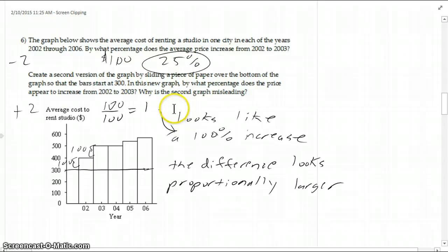So 100 over 400 is 0.25 or 25 percent increase. And then on this one, it's like, hey, what if we just chopped the graph off here at 300? Well, if we look at this, if the graph was chopped off here, then it would be a 100 increase. So again, 100, but now we're only comparing it with 100. 1 over 100 is 1, which looks like a 100 percent increase if you distort this graph. So it says, why is the second graph misleading? Because it makes it look proportionally much larger than it should be. It looks like a 100 percent increase rather than a 25 percent increase.